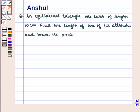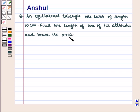Hello and welcome to the session. In this session, we are going to discuss the following question: an equilateral triangle has sides of length 10 cm. Find the length of one of its altitudes and hence its area.